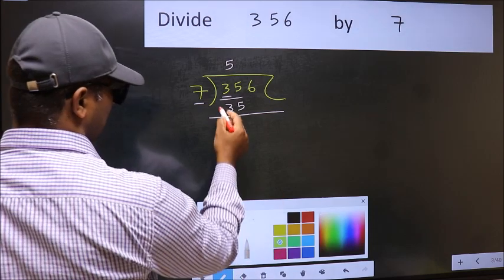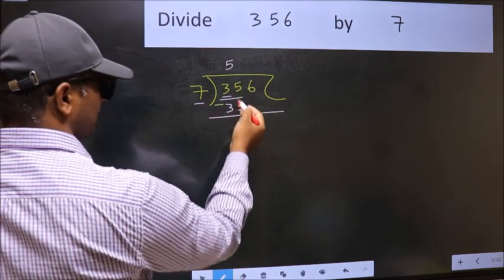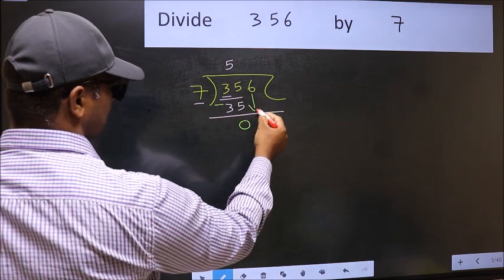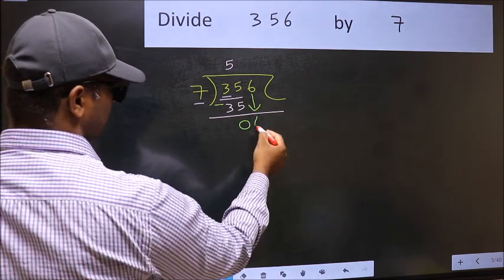Now you should subtract. 35 minus 35, 0. After this, bring down the beside number. So 6 down.